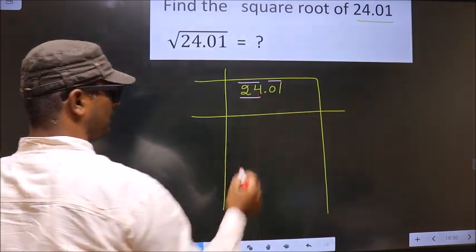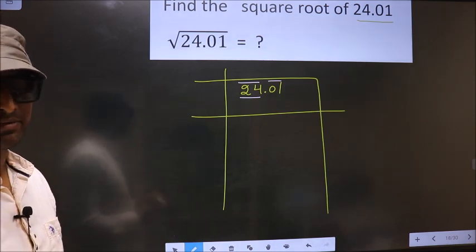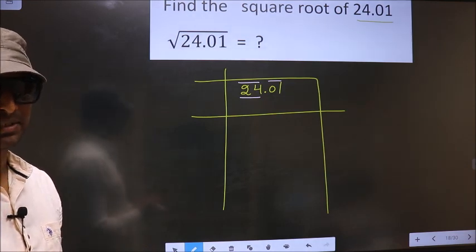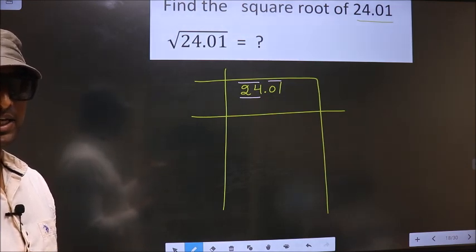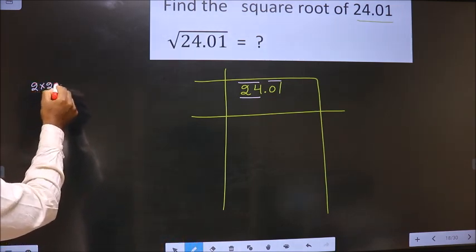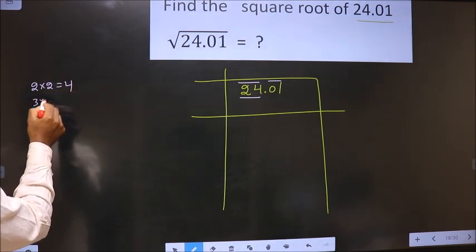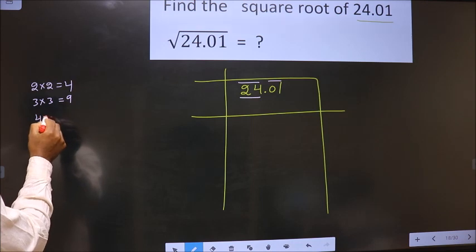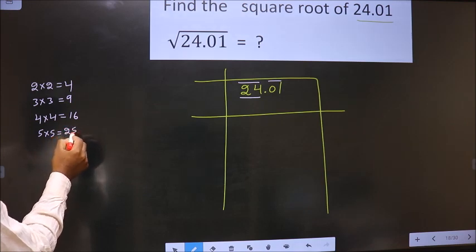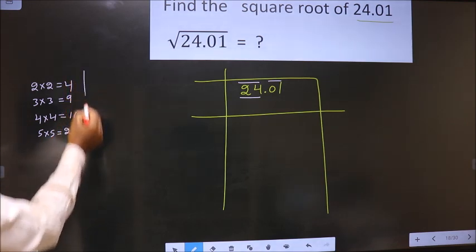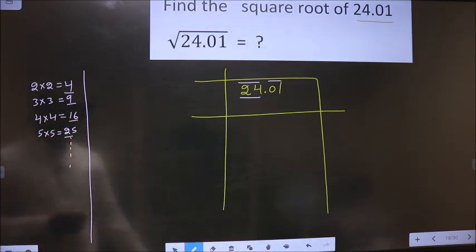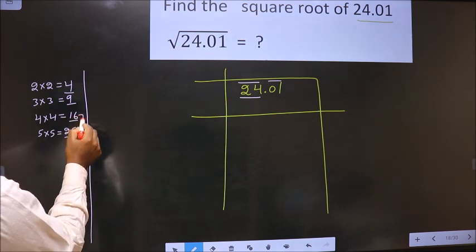Now here we have 24. 24 is not a perfect square. So we should check 24 lies between which two perfect square numbers. The perfect square numbers are 2 into 2, 4, 3 into 3, 9, 4 into 4, 16, 5 into 5, 25 and so on. These numbers are called perfect square numbers. Here we have 24. It lies between these two numbers.